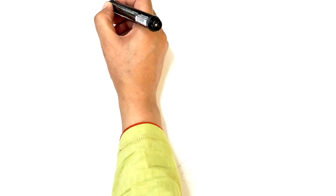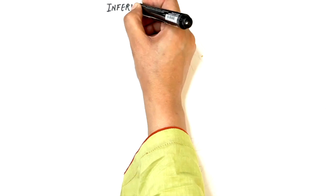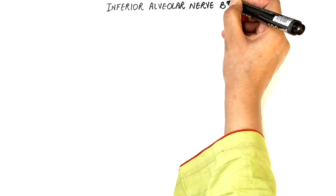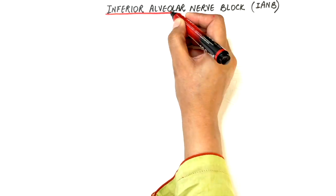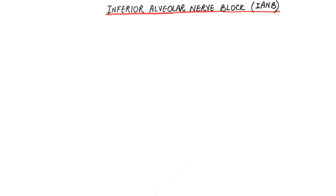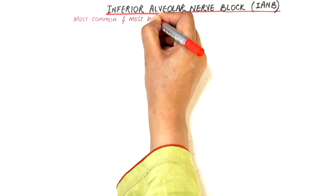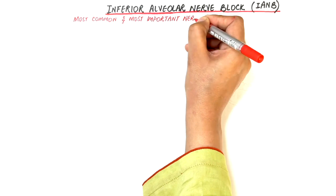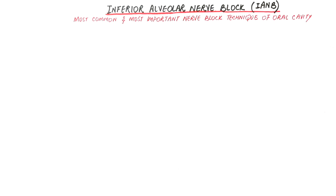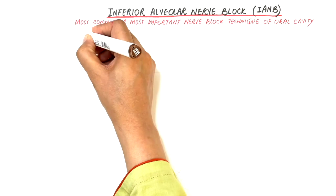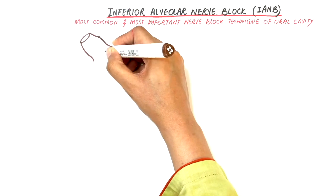The inferior alveolar nerve block is one of the most common and most important nerve block techniques in the lower arch. This block is greatly technique sensitive, which means that in order to achieve profound anesthesia of the lower jaw, the anesthetic solution must be injected at an accurate position. And in order to inject it accurately, we must first understand the anatomy and the exact position of the inferior alveolar nerve.